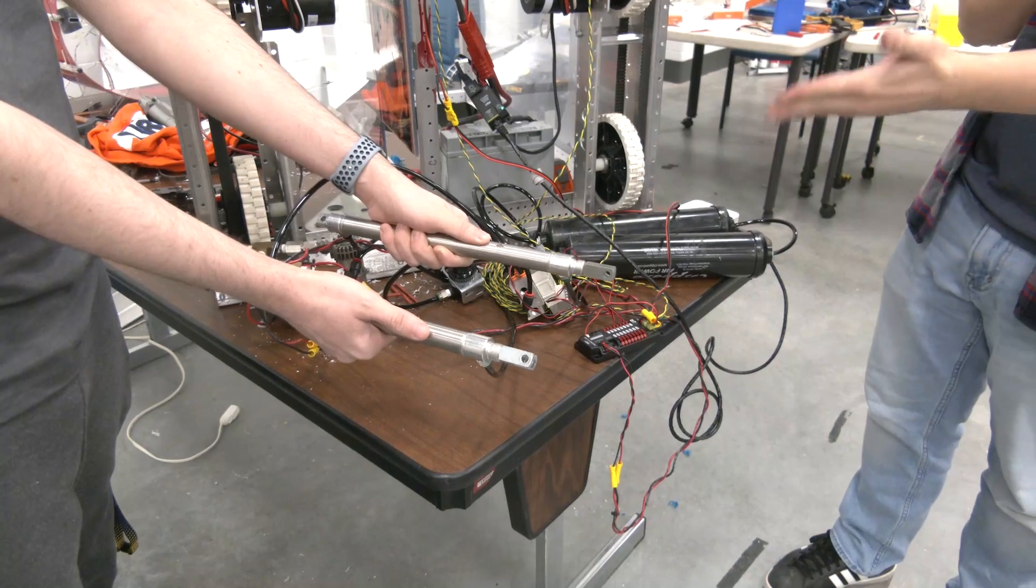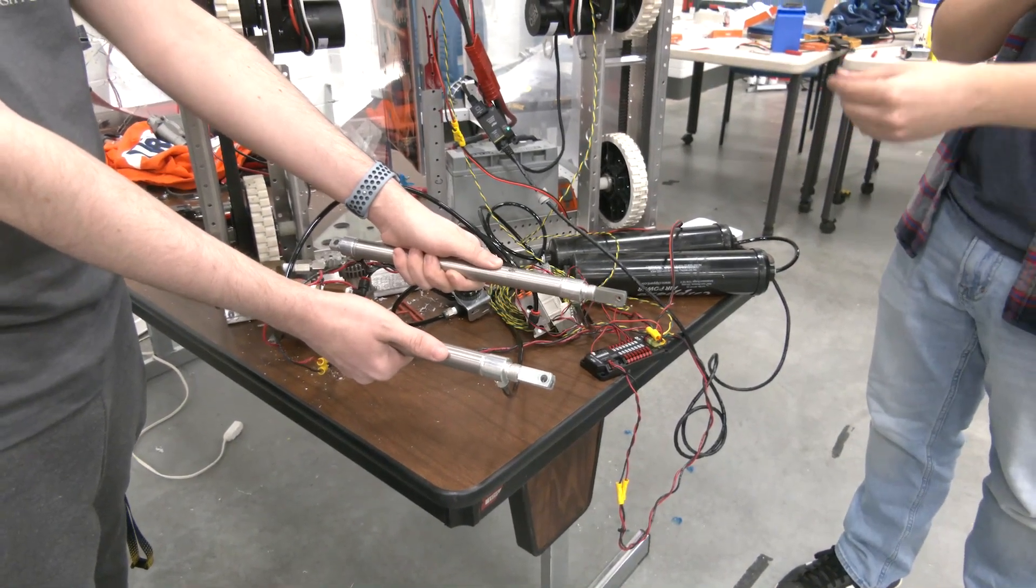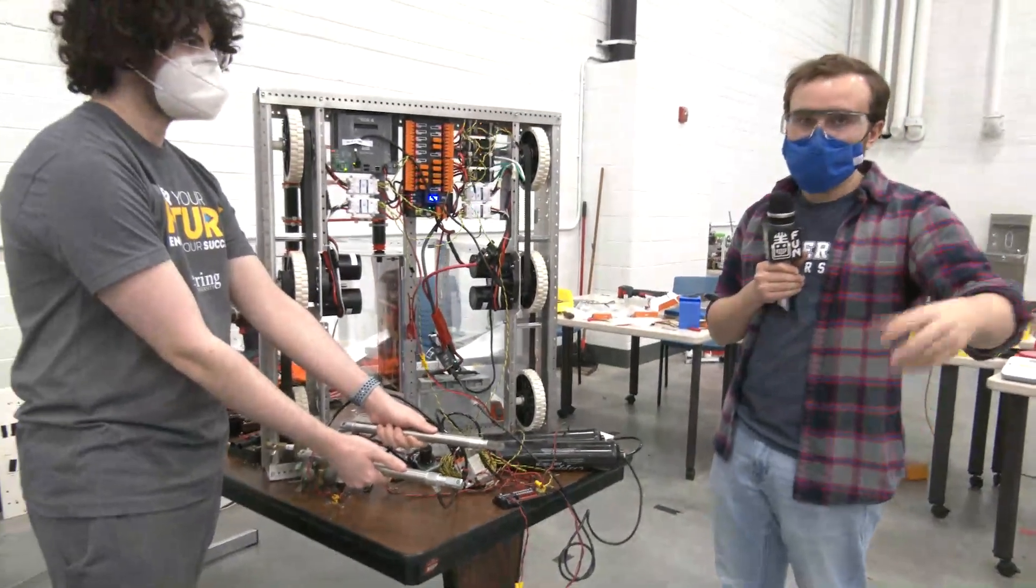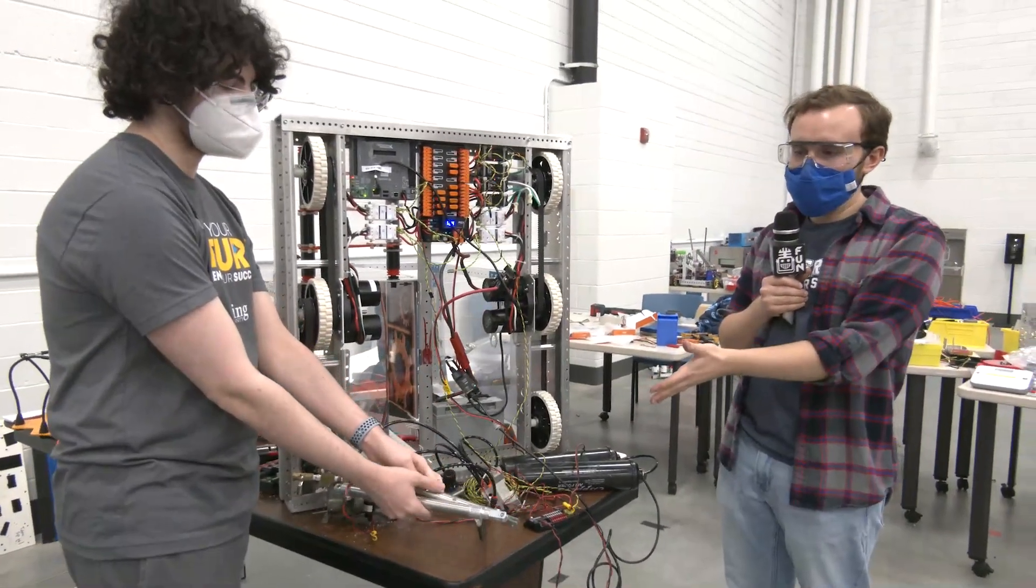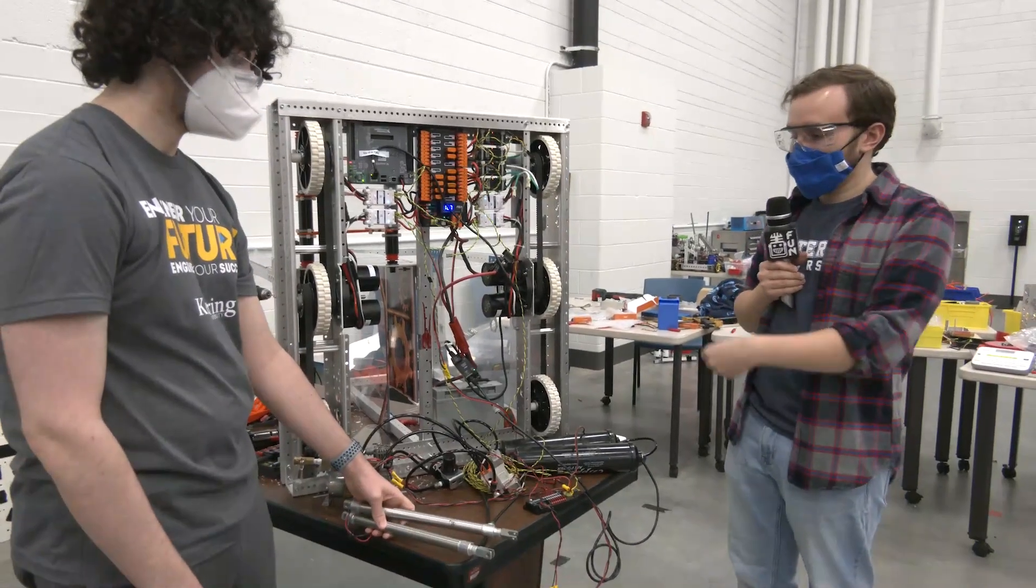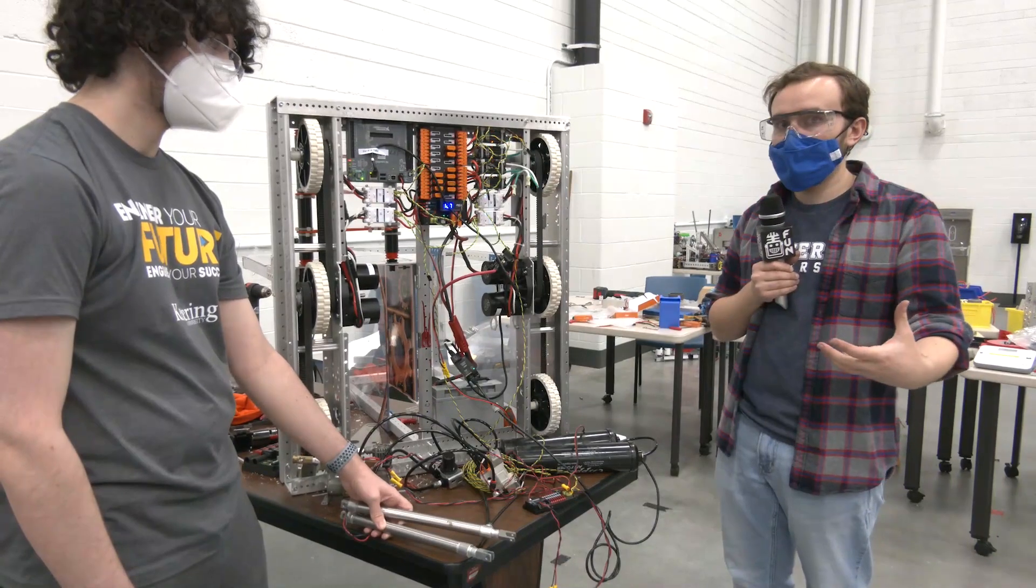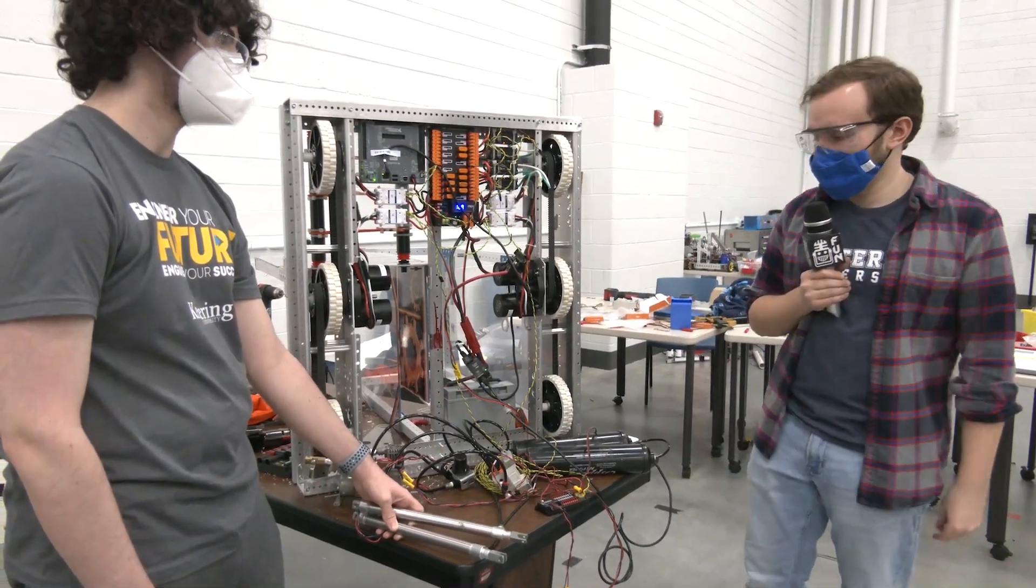The advantage of using two-position cylinders and solenoids that are capable of running them is we have a powered extension and a powered retraction on these cylinders. Some cylinders are only powered in one direction. We decided to go with both for that quick speed and having more control of our robot when we're intaking those game pieces on the field.